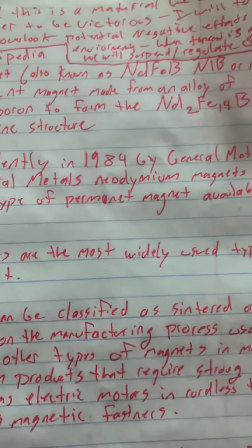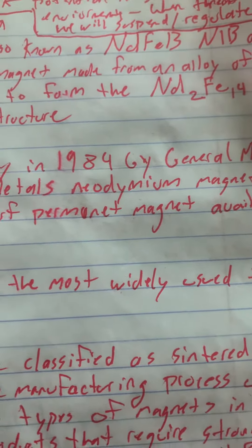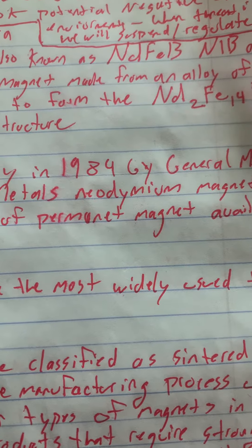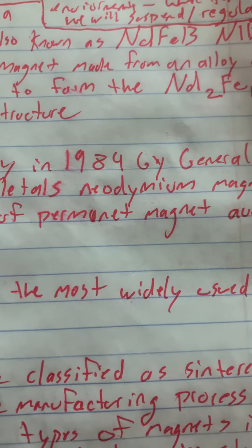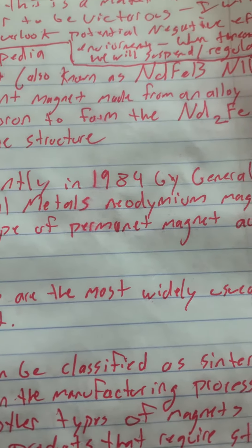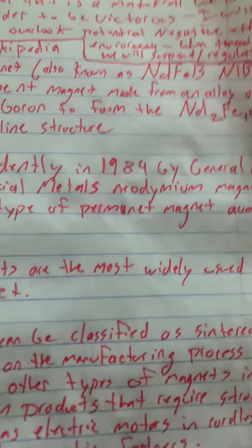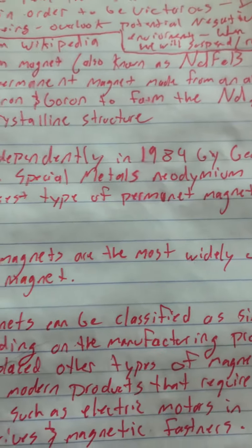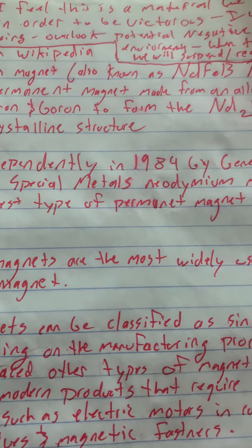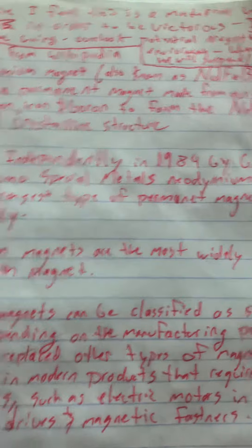Capital N lowercase d capital F capital B, or neodymium, and it's composed of neodymium, iron, and boron to form the Nd2Fe14B tetragonal crystalline structure.